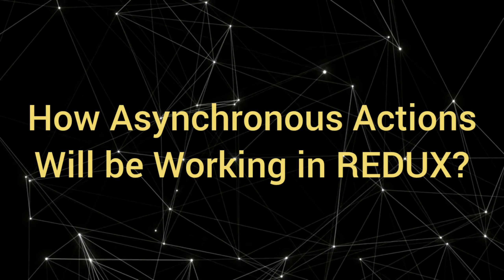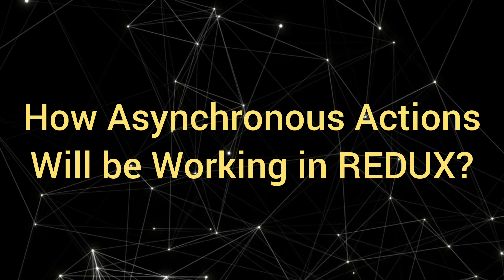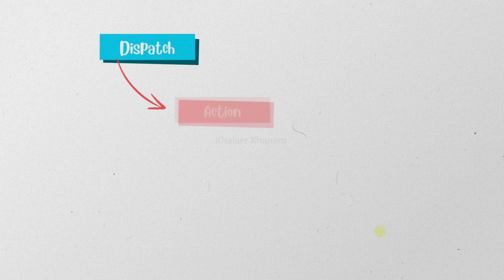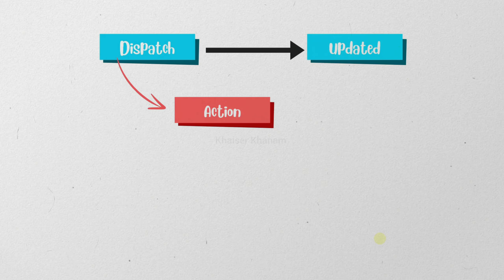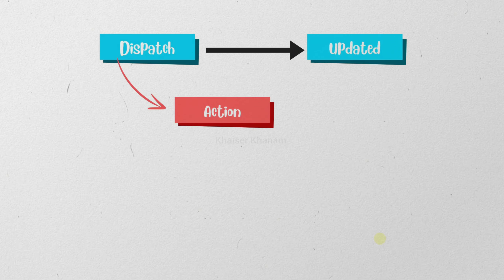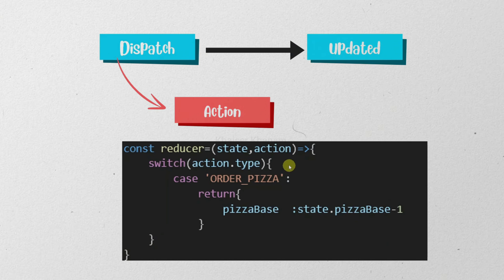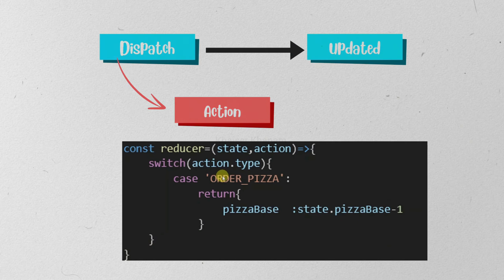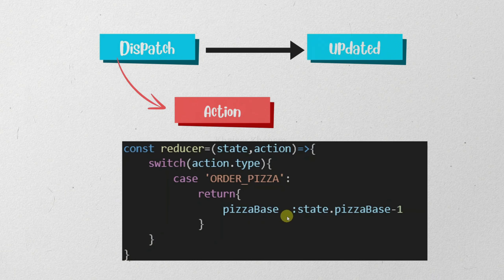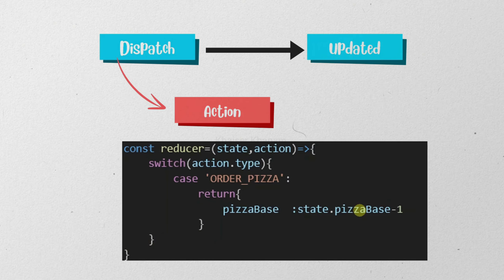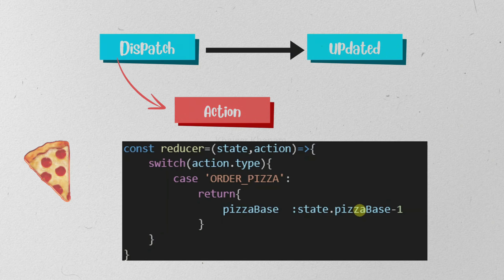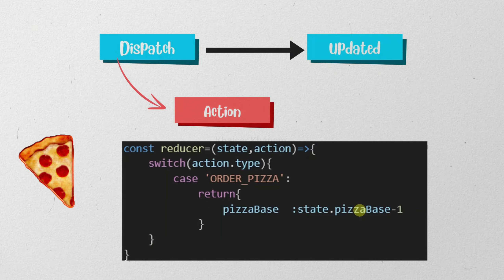Let us understand how asynchronous actions will be working in Redux. Till now we have seen synchronous actions — as soon as we dispatch the action, the state will be updated, and once the state is updated we re-render our component. For example, here we have dispatched 'order pizza' and in this case, the number of pizzas will be reduced by 1.